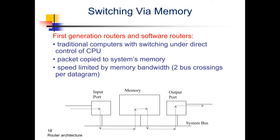These architectures were widely used at the beginning of the internet, then became less used due to system limitations. Today, with incredibly improved computer hardware performance, software routers are making a comeback — they can sometimes be faster than specialized router machines, and are less expensive because you buy a standard high-performance machine and install software to make it work as a router.